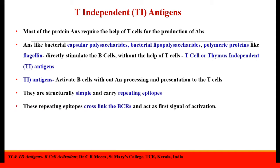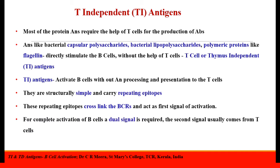These repeating epitopes cross-link the B-cell receptors on the B-cells and act as the first signal of activation. Even though T-lymphocytes are not involved in antibody production, they assist the B-cell proliferation and differentiation. For complete activation of B-cells, a dual signal is required and the second signal usually comes from T-cells.